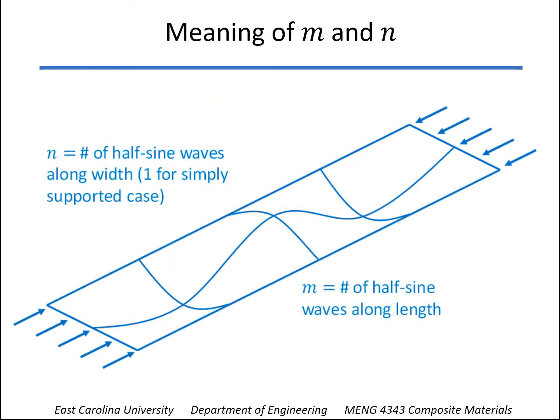So what M and N mean here - we're simply supported all the way around, so the deflection is going to be 0 at all the edges. And N is the number of half sine waves across the width, and for simply supported case, we know that's going to be equal to 1. But depending on the length of the plate here, M could be any number of half sine waves, but it has to be an integer because you have to end up at 0 on the edges.